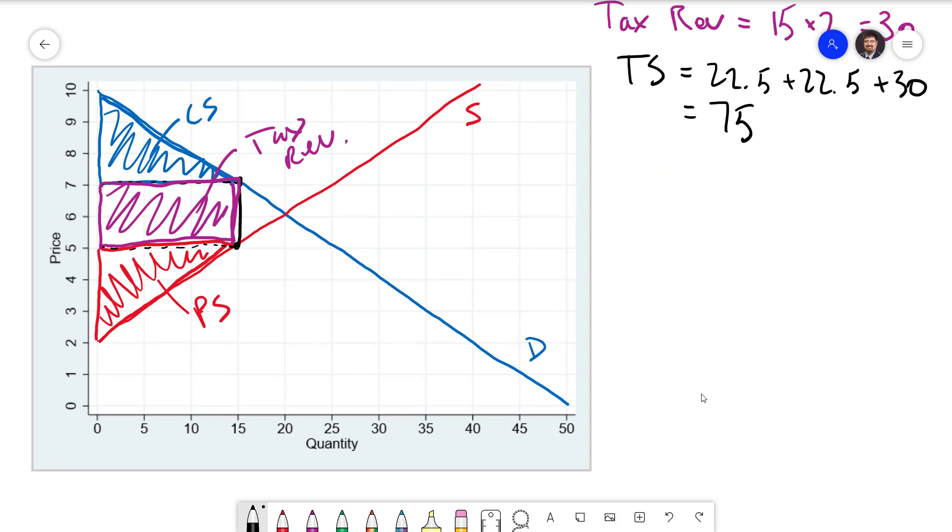If we want to think about the cost that a tax is incurring on society we need to think about how the total surplus with the tax compares to the total surplus without the tax. Without the tax there is a quantity of 20 with a price of 6, and the total surplus is the entire triangle between the supply and demand curves up to that quantity of 20. So without the tax we have a total surplus of 10 minus 2 times 20 divided by 2 which is 80.